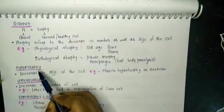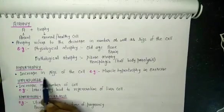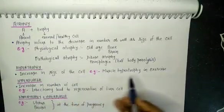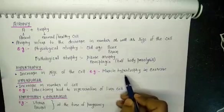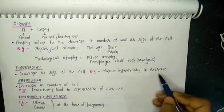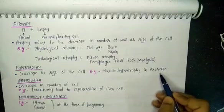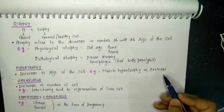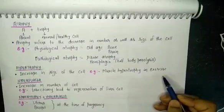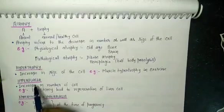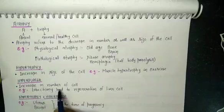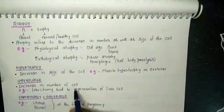Hypertrophy means increase in size of the cell. An example is regularly doing exercise — the person develops muscle hypertrophy, mainly of the deltoid muscles. Hyperplasia means increase in number of the cell.